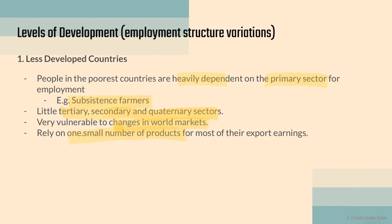Less developed countries also rely on a small number of products for most of their export earnings. Countries like Botswana and Bolivia are very specialized in resources they are endowed with due to their geographical location — such as diamonds. For example, in Botswana, a company like De Beers takes the raw diamonds and refines and packages them — that is the secondary and tertiary sector work — but this is typically done by transnational corporations. The local workers themselves are mostly miners and farmers focused on extracting the diamonds, which are then passed on to bigger firms.